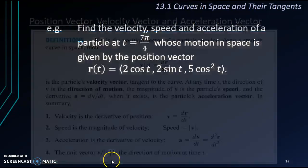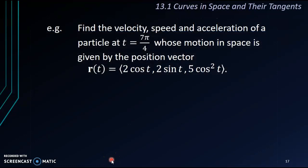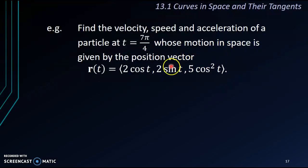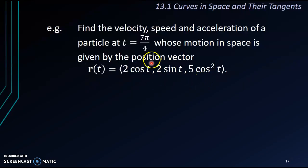For example, let's say if we want to find the velocity, speed, and acceleration of a particle at t equals 7π/4, whose motion in space is given by the position vector r(t) = (2cos t, 2sin t, 5cos²t). What we need to do is start by finding the velocity by differentiating r(t).